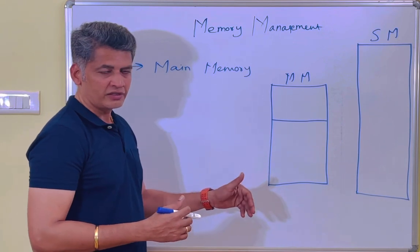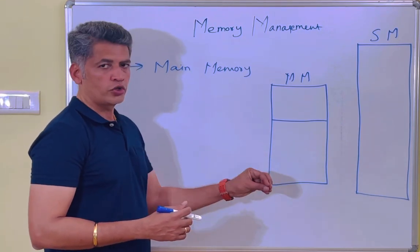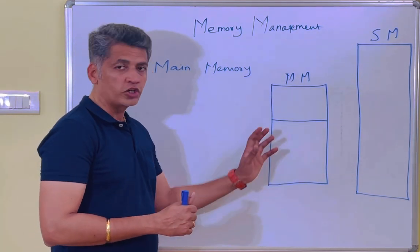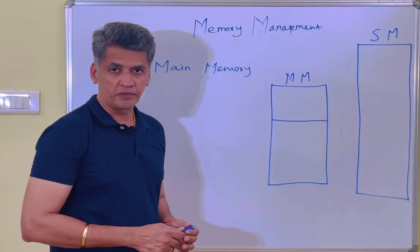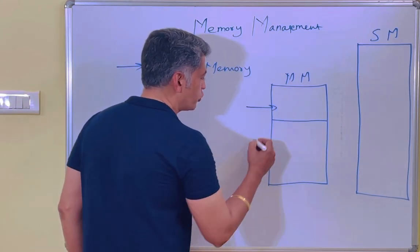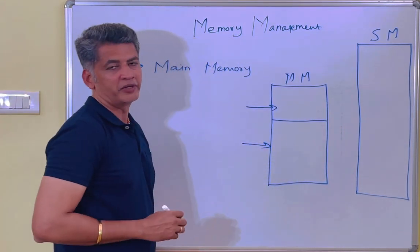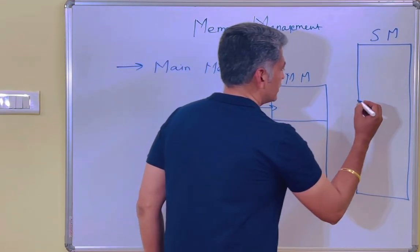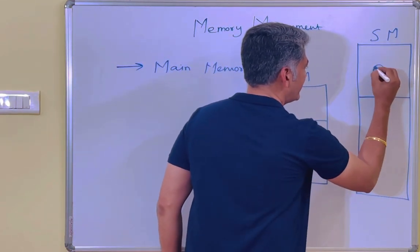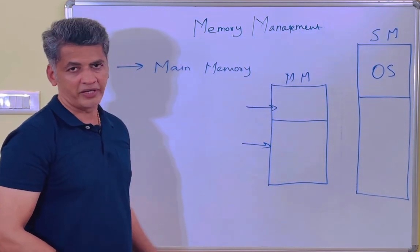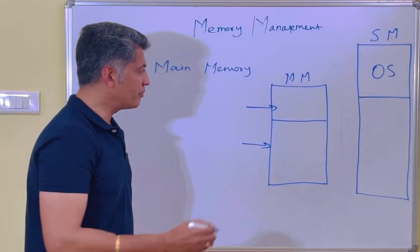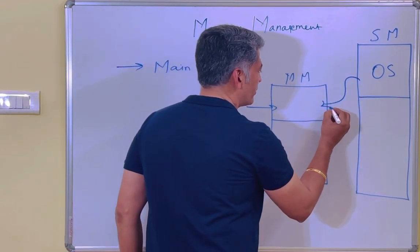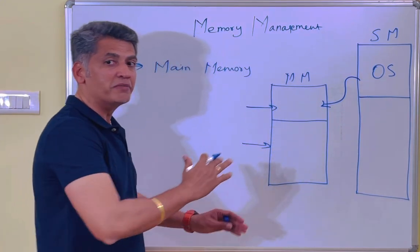Now you need to understand that whenever you switch on your system, your main memory will be occupied by your operating system. When you switch on the system, your operating system will be available in the secondary memory, and immediately this operating system will move into the main memory — that is one portion of the main memory.